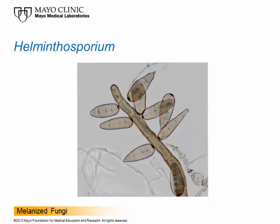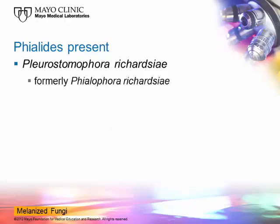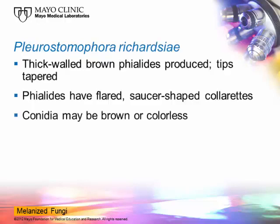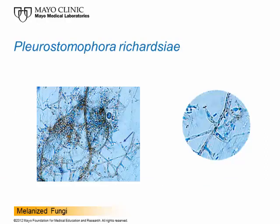There has been a name change for the next organism: it used to be called Phialophora richardsii and is now called Pleurostomophora richardsii. It produces phialides — flask-like structures that produce conidia. This organism causes phaeohyphomycosis fairly commonly. Thick-walled brown phialides are produced with tapered tips that have a flared area at the top looking like a saucer. You may find brown pigmented conidia or some that aren't pigmented at all. The right-hand side shows the phialide with the saucer-like tip where conidia are produced and kept in a mucilagenous cluster together.